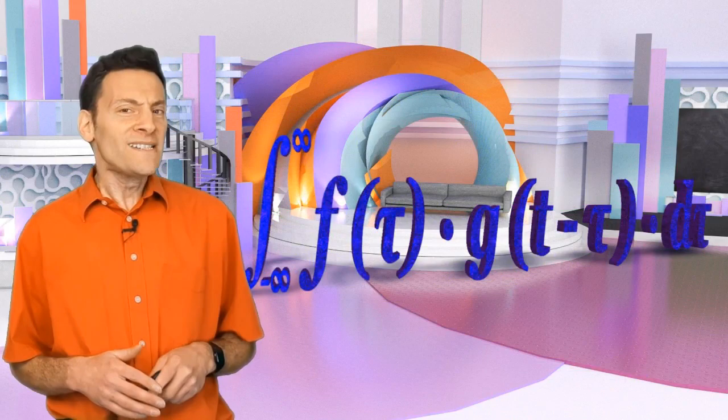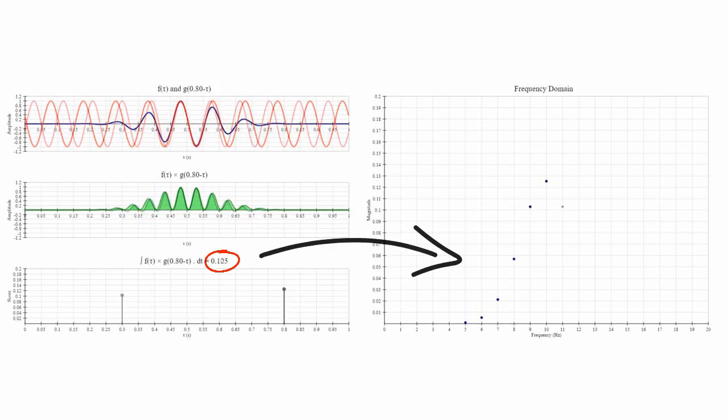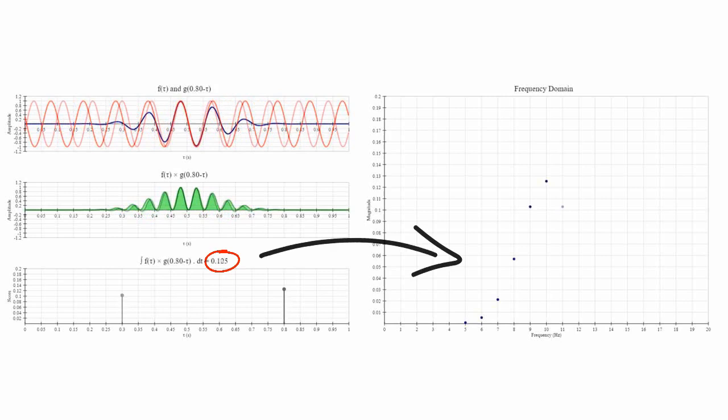So, if we were to keep changing the frequency of the sinusoid we call g of tau, then we could find the maximum score for each frequency, and plot a graph with the frequency on the x-axis, and the maximum score on the y-axis. This is the Fourier transform for this signal.